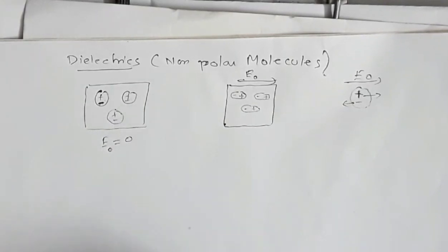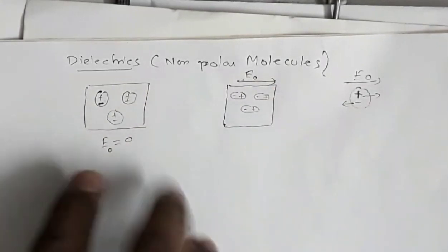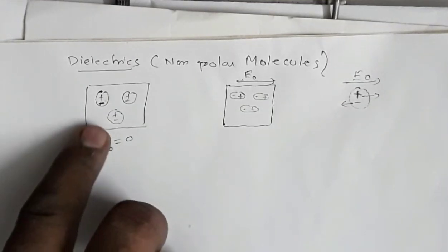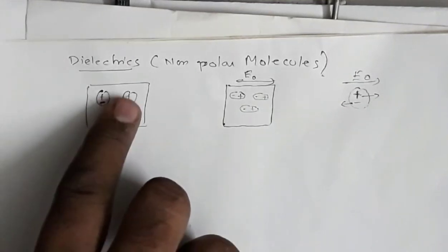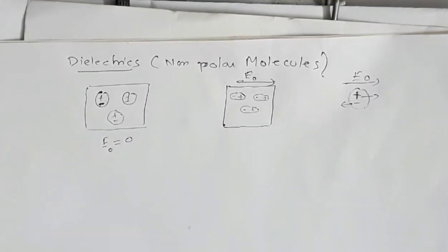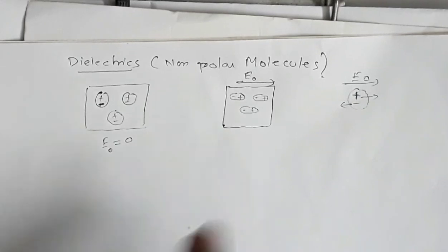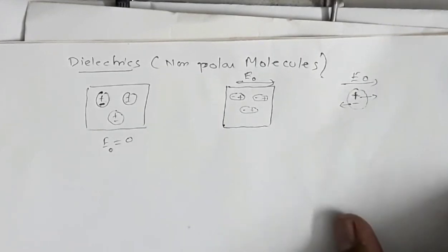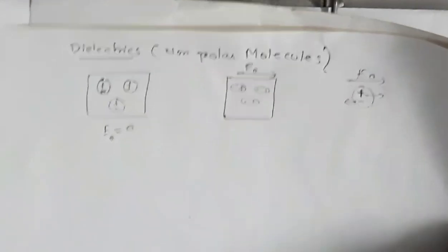So for dielectrics with non-polar molecules: in the absence of an electric field, the molecules have no dipole moment. When an external electric field is applied, the molecules develop a dipole moment and the material as a whole develops a dipole moment. This is the behavior of dielectrics with non-polar molecules.